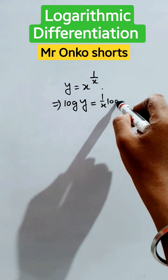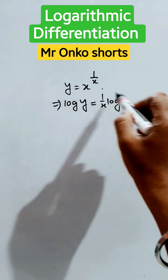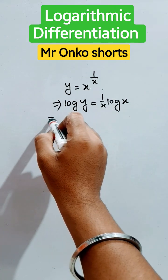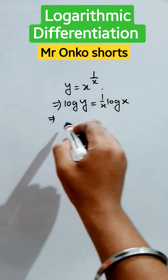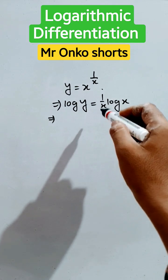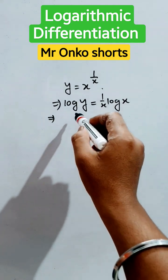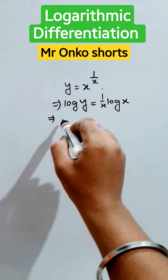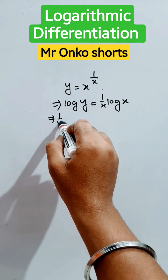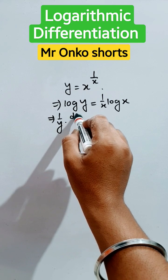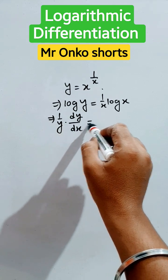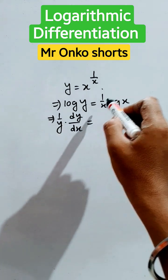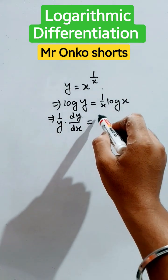Now take the differentiation of both parts. Differentiating log y, we will get 1 by y into dy/dx, which is equals to u into v — applying the product rule to the right-hand side.